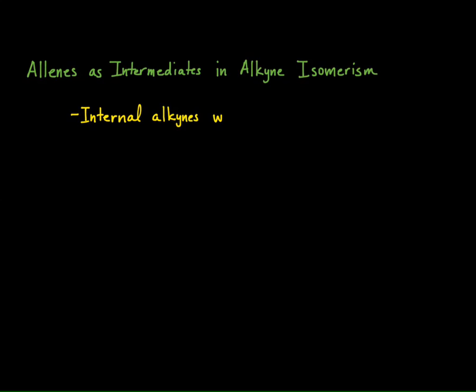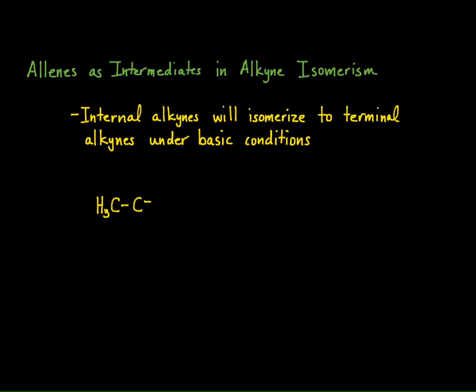One of the reasons why we discuss allenes first is because they're actually involved as intermediates in alkyne isomerism. What happens in alkyne isomerism is that if you have an internal alkyne and you treat it with a strong base, it actually isomerizes into a terminal alkyne.